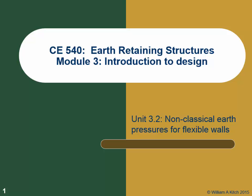Last time we talked about things that are going to cause our earth pressures to not meet the classical earth pressure limit states — Coulomb-Rankine and the log spiral. But that was all having to do with rigid walls that translated rigidly. Today we're going to talk about non-classical earth pressures that come from the fact that walls aren't rigid — they're actually flexible. Some walls are more flexible than others, and we'll understand that when we get into design.